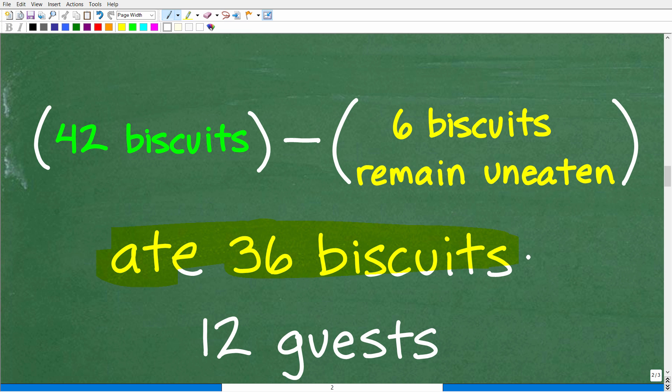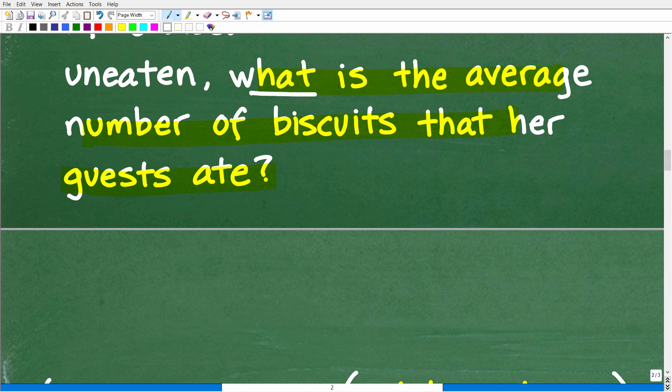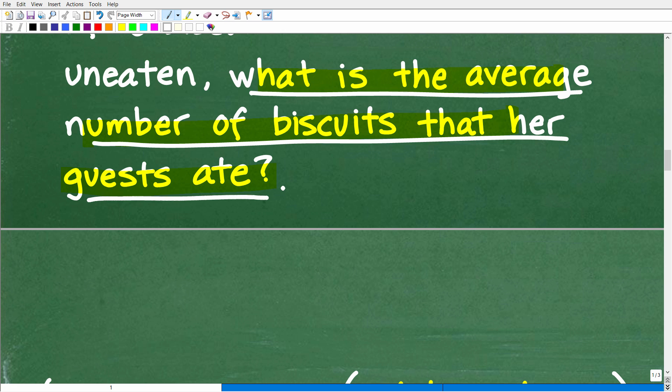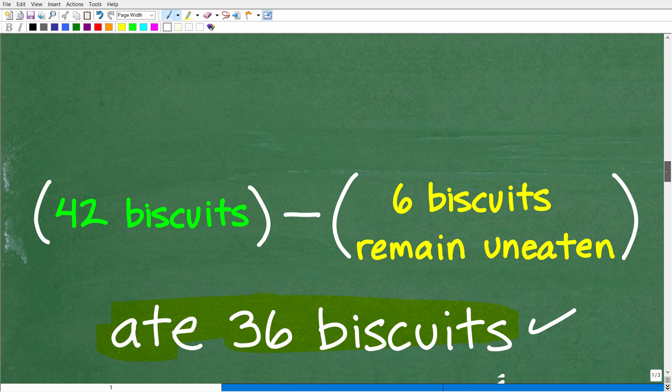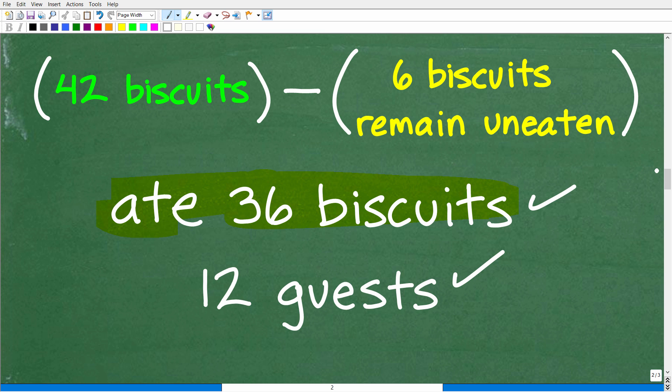But the rest of the problem states the following: If six biscuits remain uneaten, what is the average number of biscuits that her guests ate? So what we need to do is calculate the actual number of biscuits that her guests ate, which of course is pretty straightforward math. We can just think to ourselves, there's 42 biscuits, six biscuits remain uneaten. So 42 minus six is 36 biscuits. So that's how many biscuits that her 12 guests ate. So they ate 36 biscuits. How many people ate them? 12 guests. And what is the question?